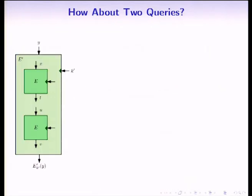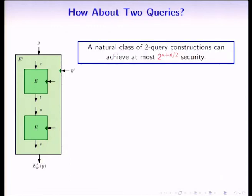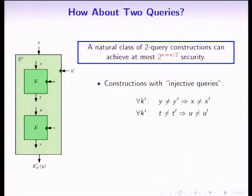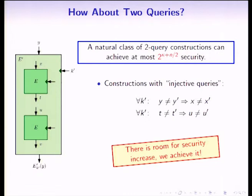This leads to questions about two-query constructions. We also give an attack providing an upper bound on security: for a wide and natural class of two-query constructions with injective queries — where distinct inputs imply distinct first queries and distinct first-query outputs imply distinct second queries — they can achieve at most 2^(kpa + n/2) query security. This bound still allows for significant security improvement, so we look for two-query constructions achieving it.